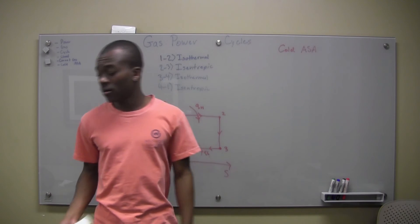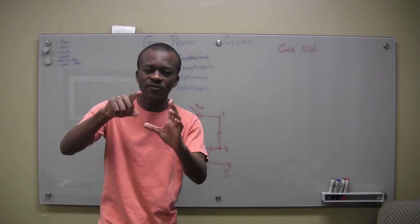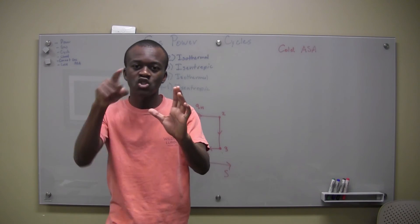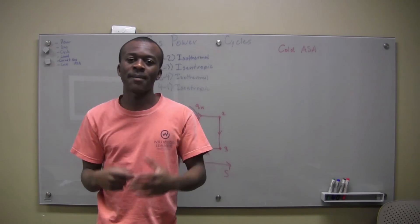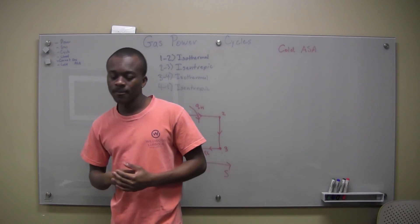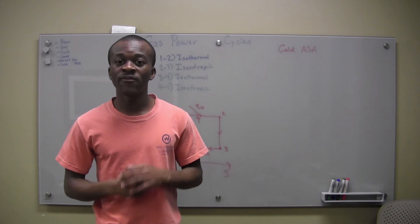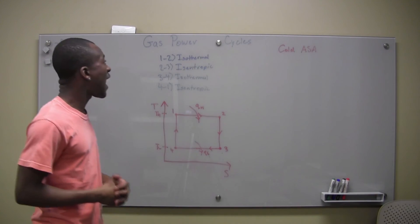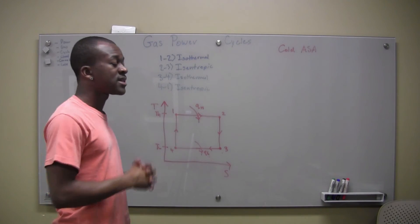Each stroke sort of turns the wheel like one-fourth. So it just does it really rapidly and constantly. But that's really what you need to know before diving into the actual power cycles.